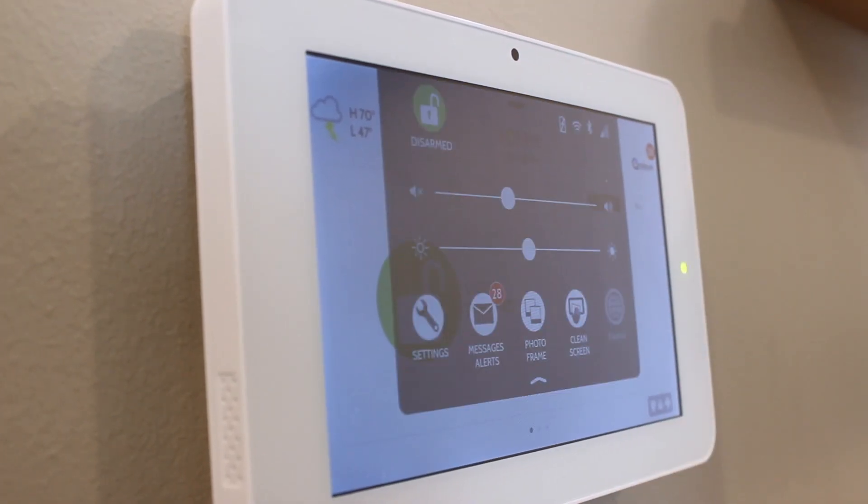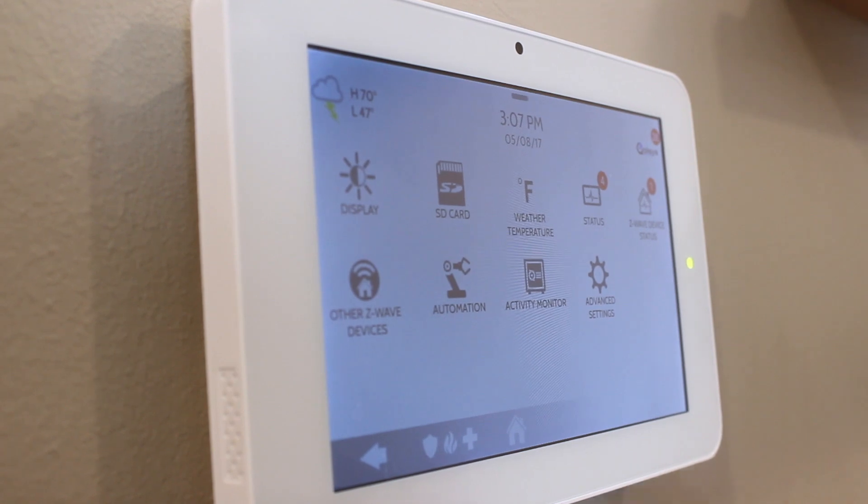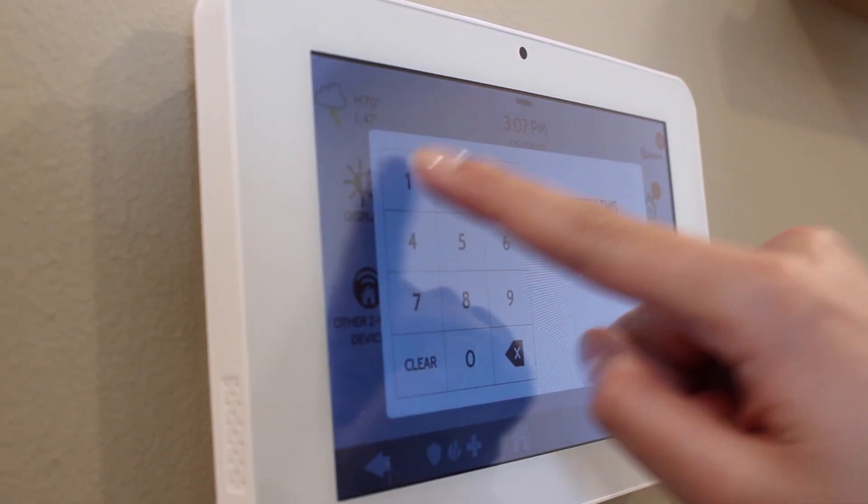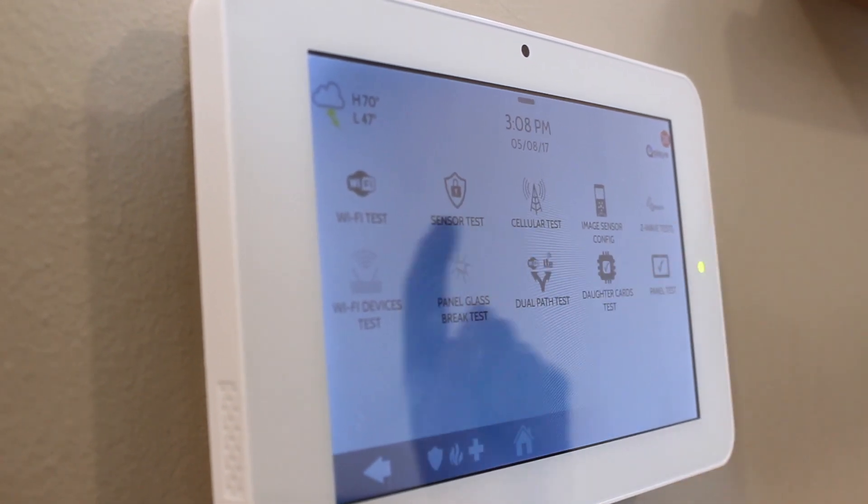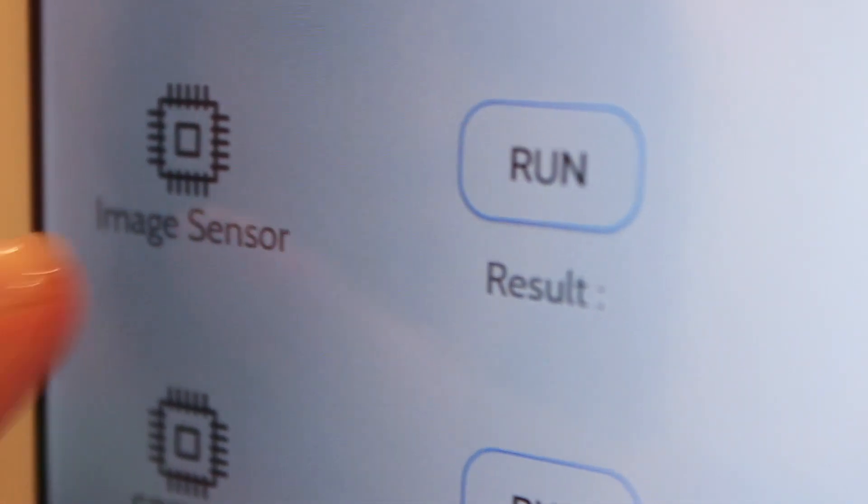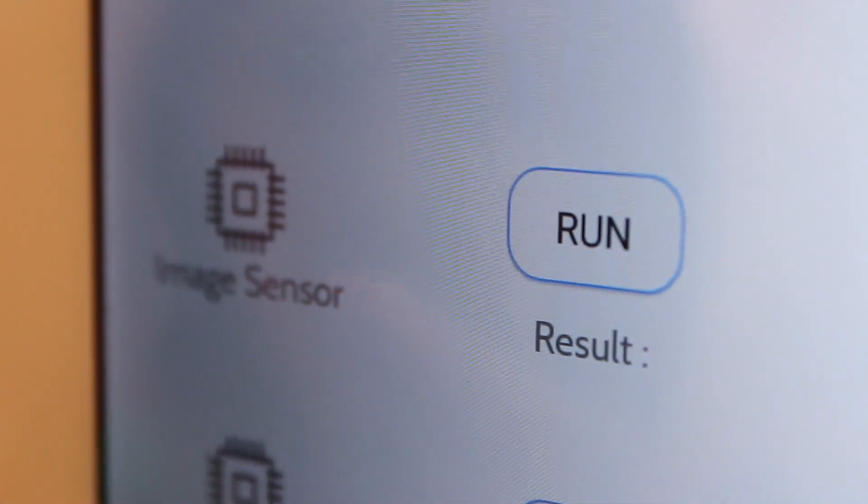To verify that it is working properly, go to settings, advanced settings, type in your code, go to system tests, and daughter card tests. The panel should show that the image sensor daughter card is installed.